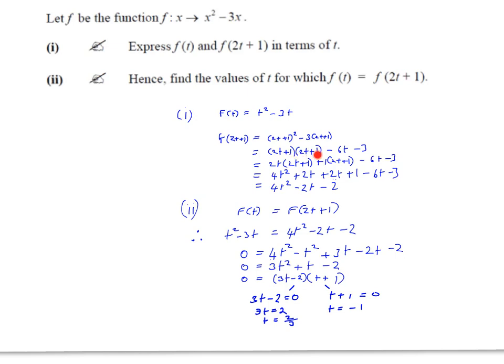So 2t+1 times 2t+1. You can multiply that out by using the split and repeat method. We multiply the 2t by 2t+1 and then the 1 by 2t+1, as we did here. And of course the 3 times 2t+1 gives you minus 6t minus 3. So then you multiply out the brackets here and you get 4t squared plus 2t plus 2t plus 1 minus 6t minus 3. Then it's a question of adding the like terms until you end up with 4t squared minus 2t minus 2.